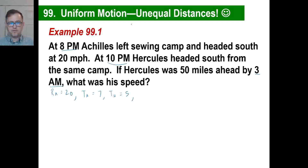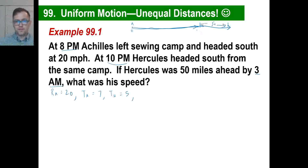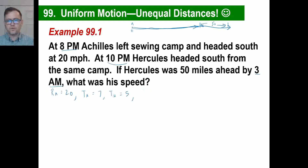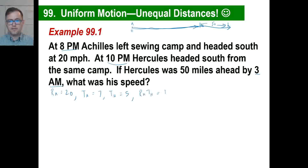So we've got a rate, a time for Achilles, and a time for Hercules. Now we need a distance equation. Here's Achilles — he leaves sewing camp and goes south. At 10pm, Hercules heads south from the same place. They tell us Hercules ends up 50 miles ahead. So the distance of Hercules is 50 miles longer than the distance of Achilles.